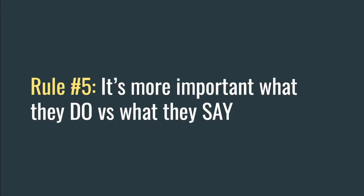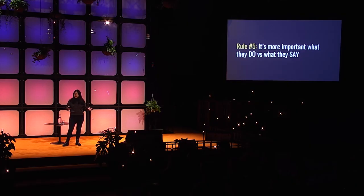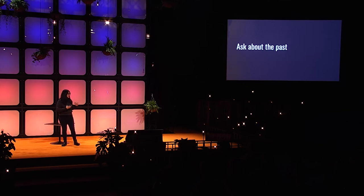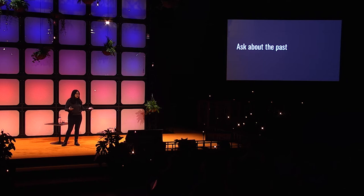Rule number five: it's more important what they do versus what they say. We ran into this with our corporate social network. Friends and family said, 'Absolutely we'll use it,' and then we launched and hardly anybody did. To get at what people actually do, ask about their past — things like, 'What was the last game you played? How did you find it? Did a friend tell you?' Recalling the past is much easier and more truthful than predicting future behavior.